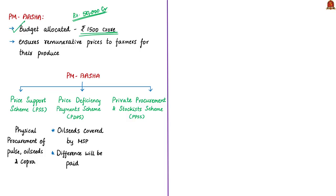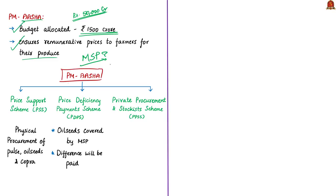PM ASHA is the acronym for Pradhan Mantri Annadata Aay SanRakshan Abhiyan. The PM ASHA scheme is aimed at ensuring remunerative prices to farmers for their produce. You may wonder — we already have the Minimum Support Price (MSP) for this. This is because increasing MSP is not adequate; it is important that farmers get full benefit of the announced MSPs. The government realizes that if the price in the agricultural produce market is less than MSP, then the state and central governments should purchase at MSP or work to provide MSP through some other mechanism. With this approach, the umbrella scheme PM ASHA was introduced.